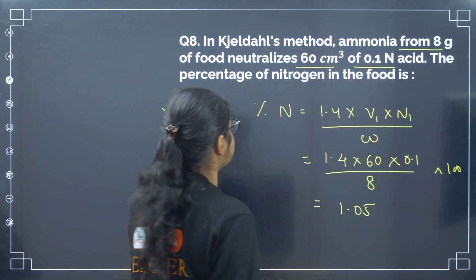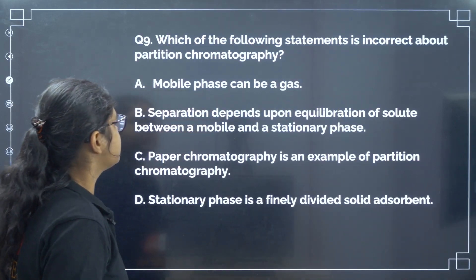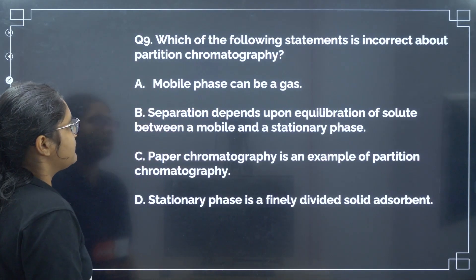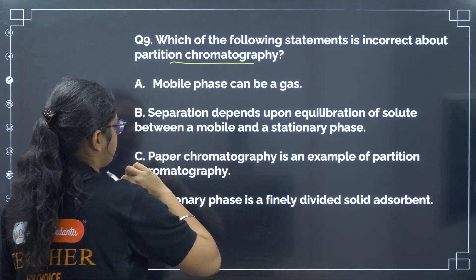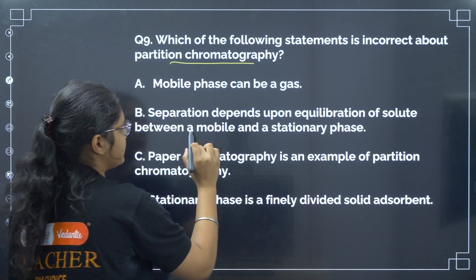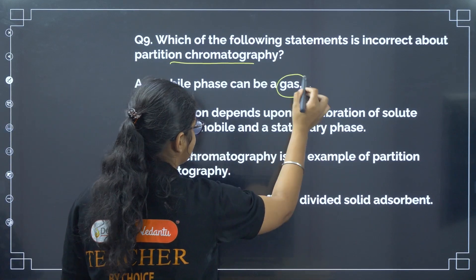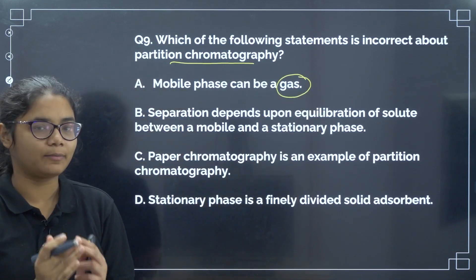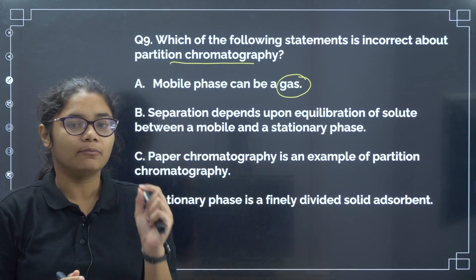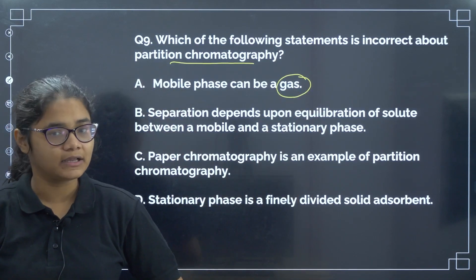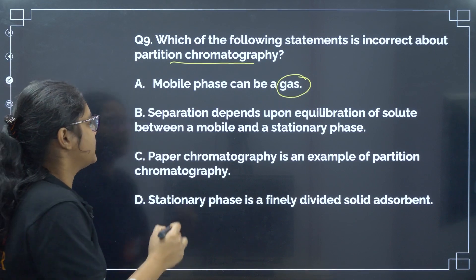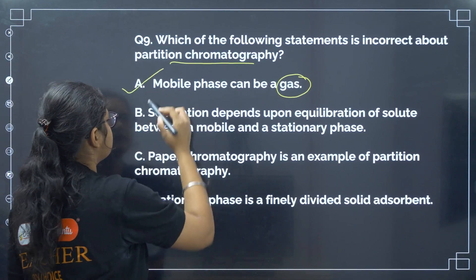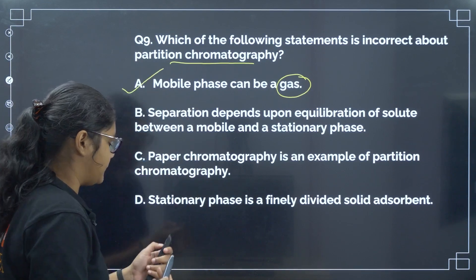Next: which of the following statement is incorrect about partition chromatography? The statement 'mobile phase can be a gas' is incorrect — in partition chromatography, the mobile phase is a liquid. The incorrect statement is option number A.